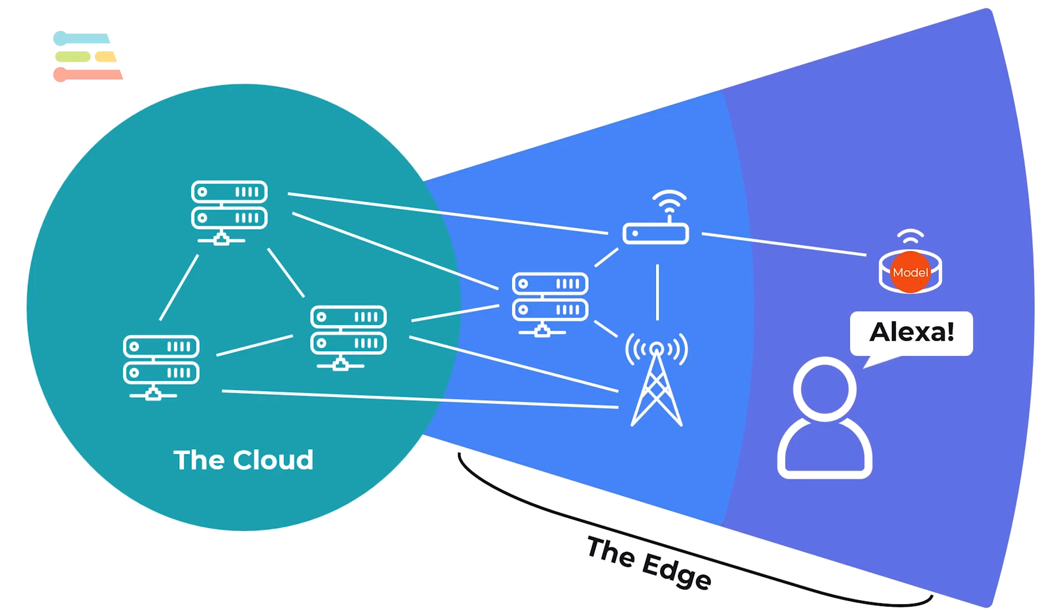Once it hears that, it begins to stream raw audio to a cloud server, which performs inference using a much larger and more complex machine learning model. This model performs intent analysis to figure out what the person is asking for. It looks up that information and sends the response back to the speaker, which then plays it in audio form. The smaller model running locally on the speaker allows it to respond to a user in real time without having to waste bandwidth constantly streaming audio.